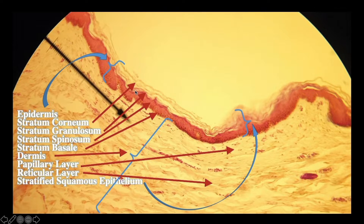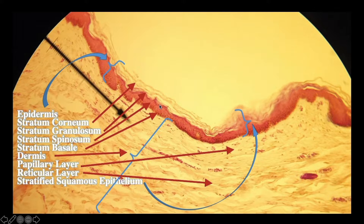So what are the two general layers of the skin? Epidermis and dermis. And what are the four layers of just the epidermis in thin skin? Stratum corneum, stratum granulosum, stratum spinosum, and stratum basale.